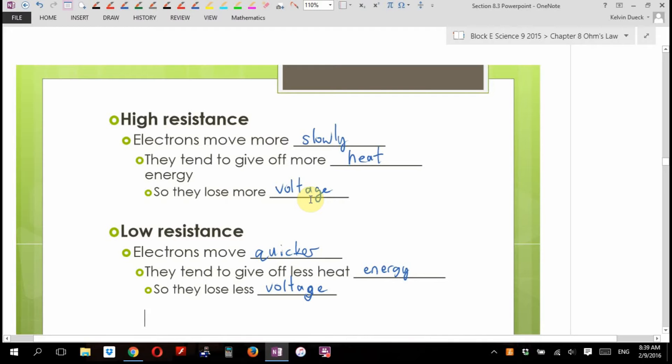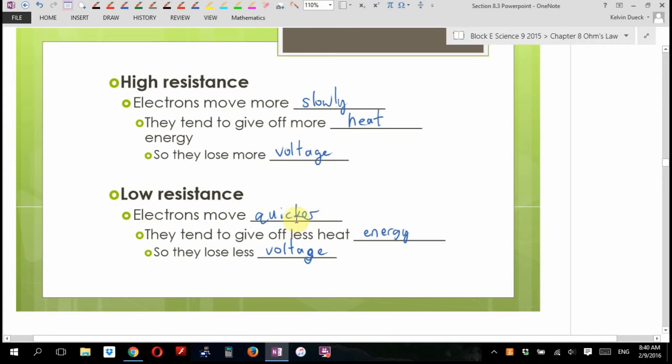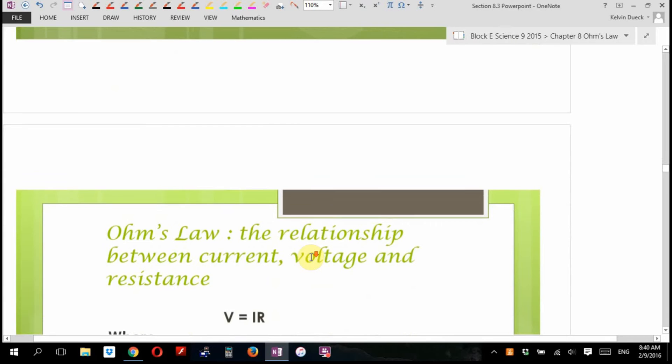Another way to think about resistance is if we have a hallway. If you were trying to run down the hallway, if the hallway was empty, no problem. If the hallway was full of other students, that's high resistance. Or if the hallway was narrower, that's high resistance. That's what brought us to this straw analogy. Another way you can think of resistance is the thickness of a straw. In high resistance, electrons move more slowly. They give up more heat, so they lose more voltage.